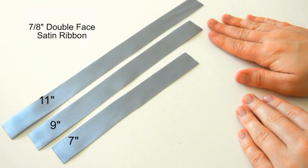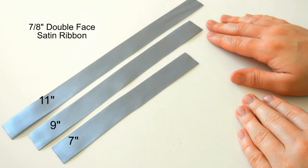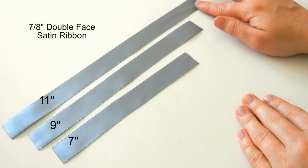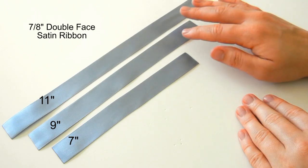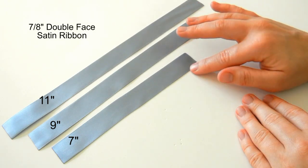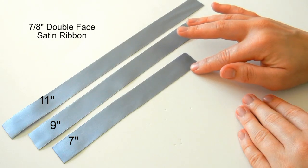Cut three pieces of your ribbon. I'm using seven-eighths of an inch double face satin. I've cut my first one to 11 inches, this one is 9 inches, and this one is 7 inches. Make sure to seal your ends.